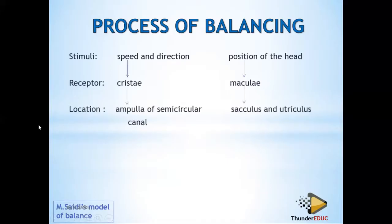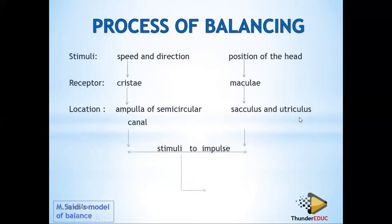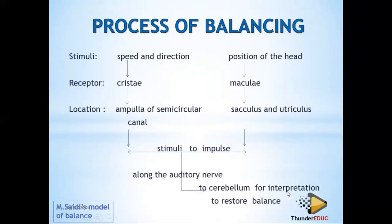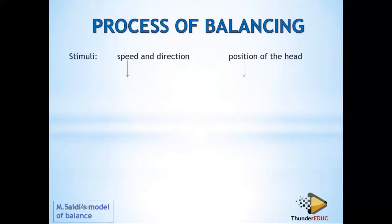You need to know the location of these receptors: the cristae are located in the ampulla of the semicircular canal, and the maculae are located in the saccule and utricle. You also need to know that when these receptors convert the stimulus into an impulse, it is sent to the brain — specifically the cerebrum for interpretation. Remember that hearing is also sent to the cerebrum, and balance impulses go to the cerebrum for interpretation.